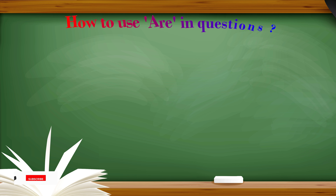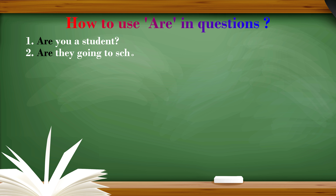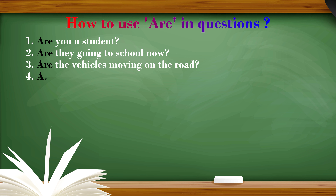The verb 'are' must be used at the beginning of a sentence when asking questions. Please observe the following examples: Are you a student? Are they going to school now? Are the vehicles moving on the road? Are the dogs barking at them? These are all active voice sentences.